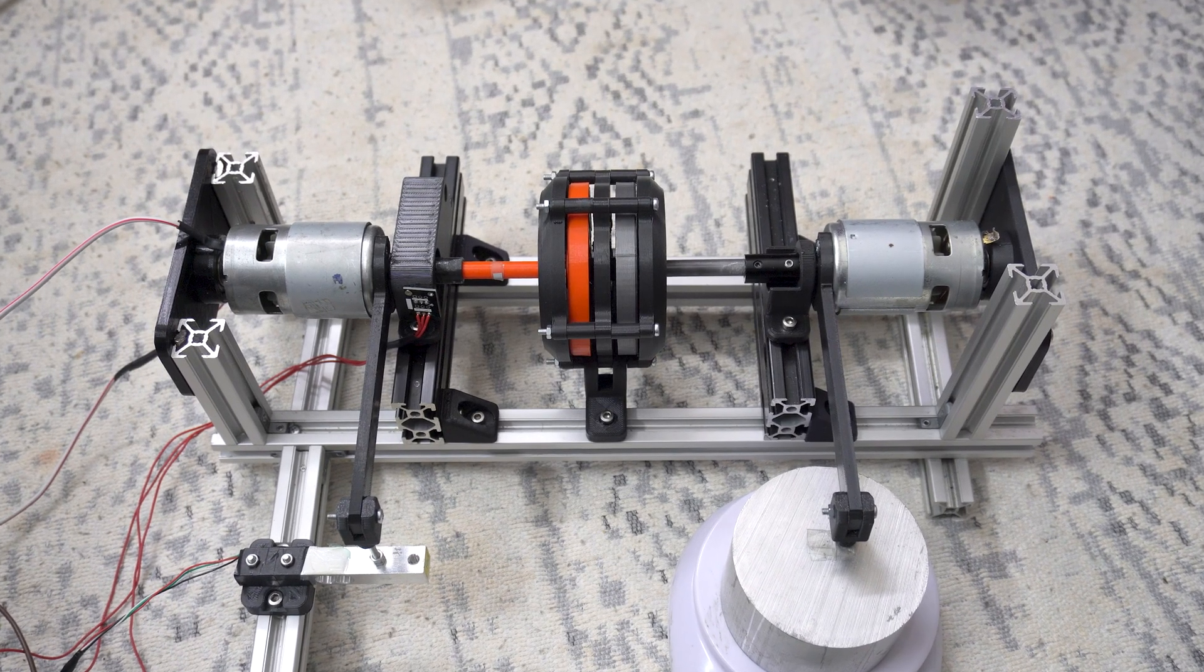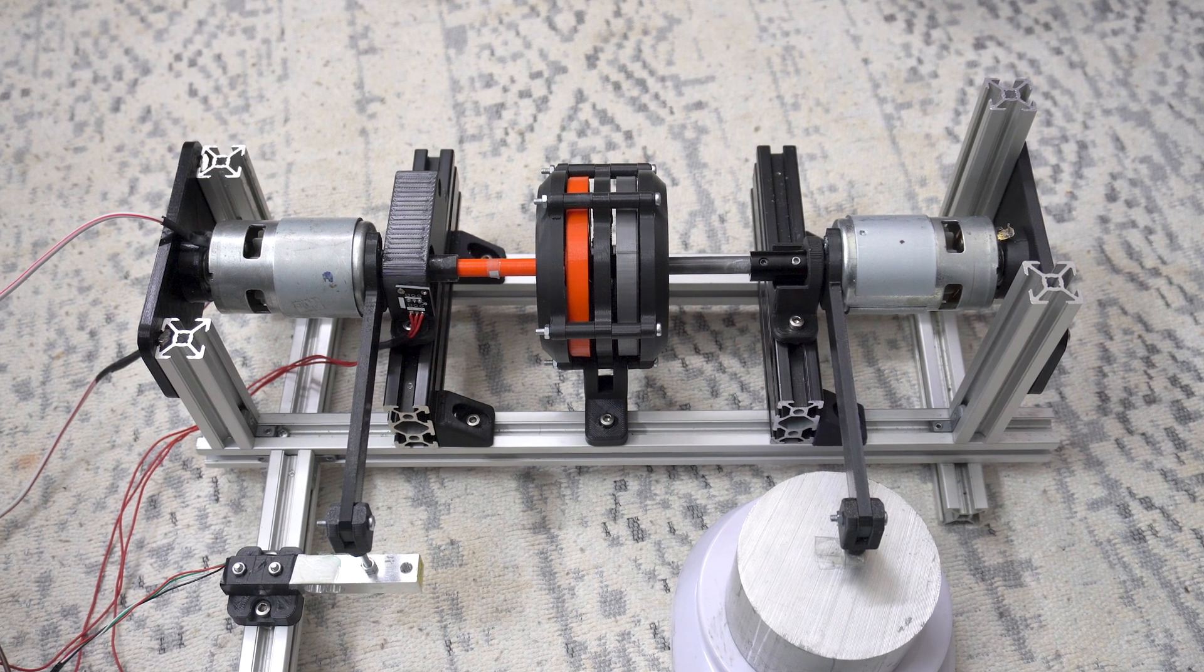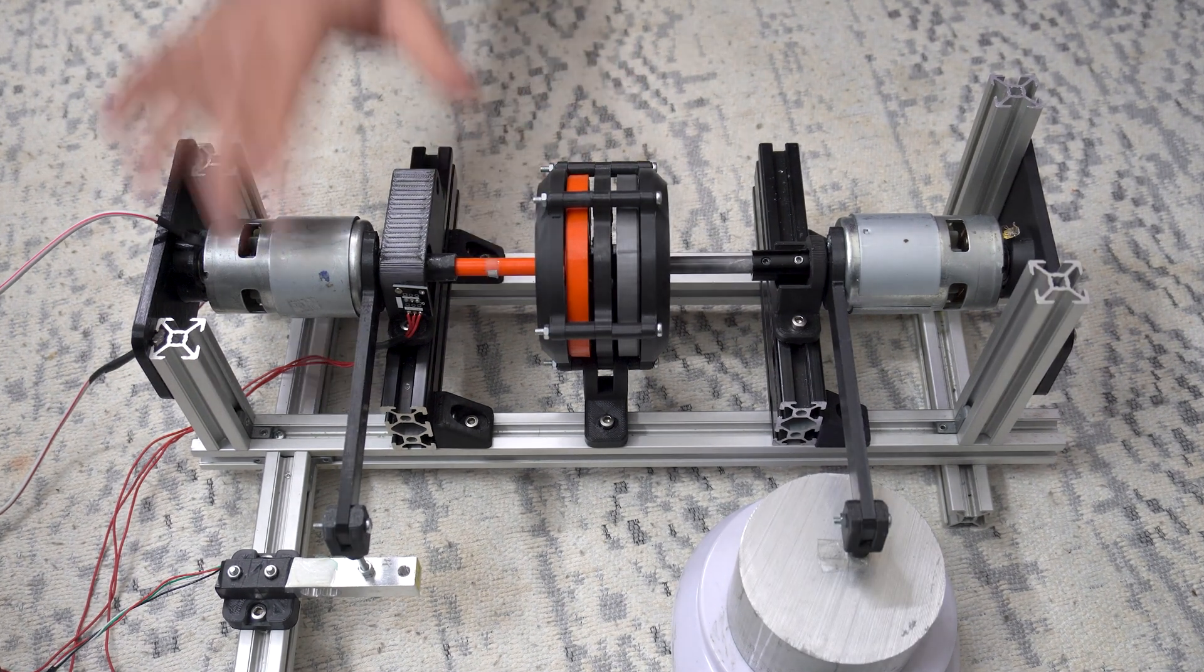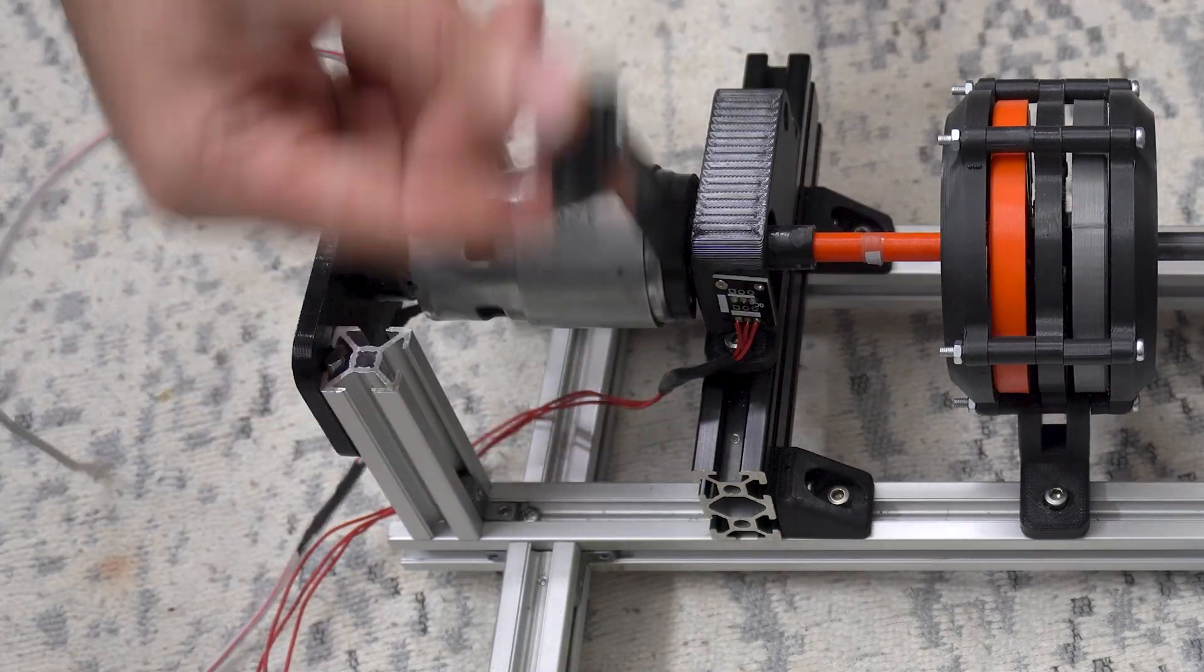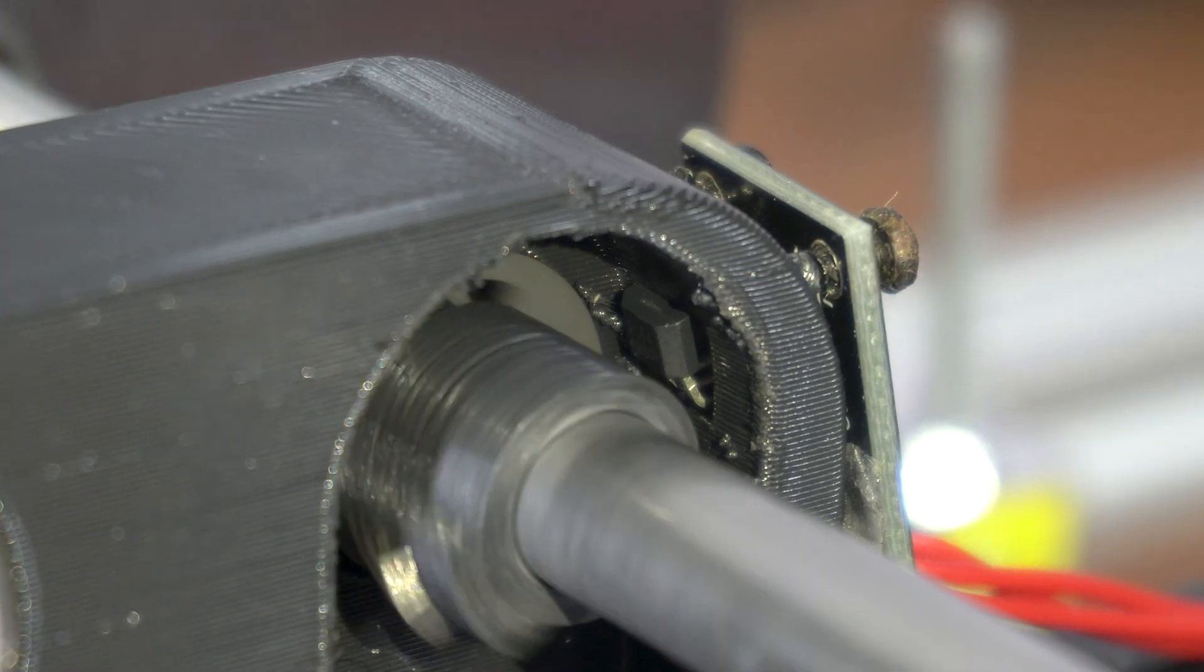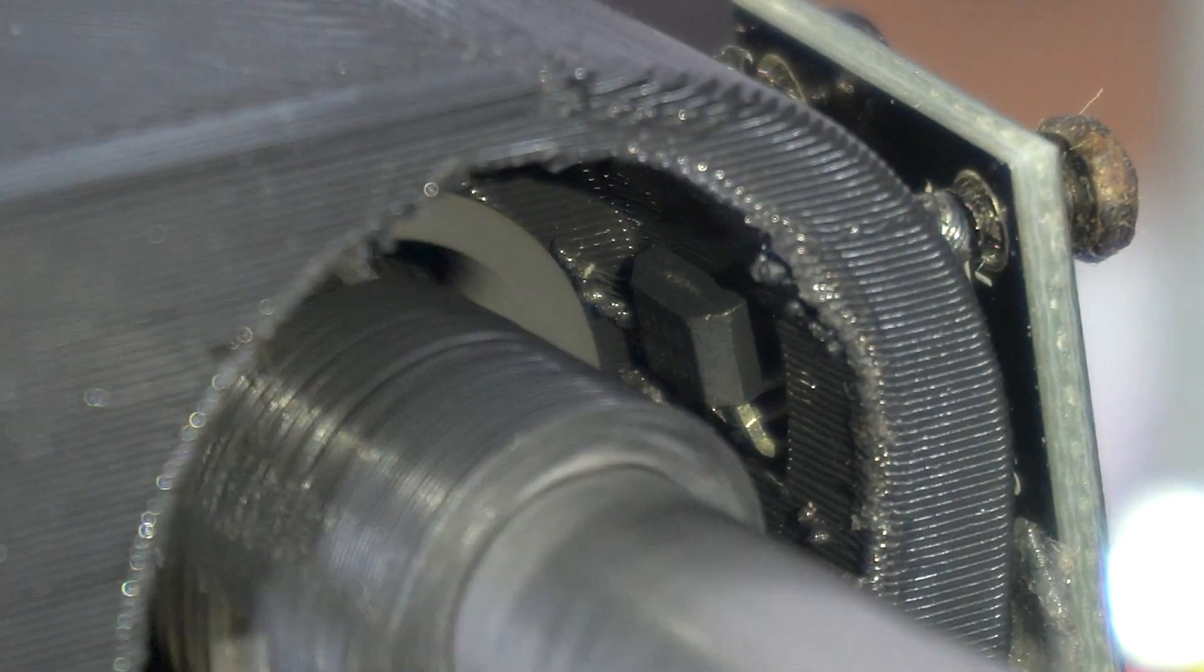By the way, to measure the efficiency, I compared the mechanical powers on the input and output shafts. For the power on the input shaft, I have the motor mounted freely, and I measure the torque using a load cell and the speed with a hall sensor to calculate the mechanical power.